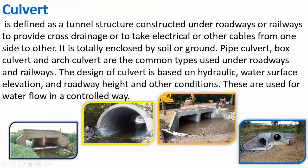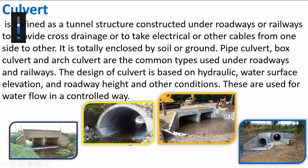A culvert is defined as a tunnel structure constructed under roadways or railways to provide cross drainage or to take electrical or other cables from one side to the other. It is totally enclosed by soil or ground. Pipe culvert, box culvert, and arch culvert are the common types used under roadways and railways. The design of a culvert is based on hydraulic water surface elevation, roadway height, and other conditions. These are used for water flow in a controlled way.